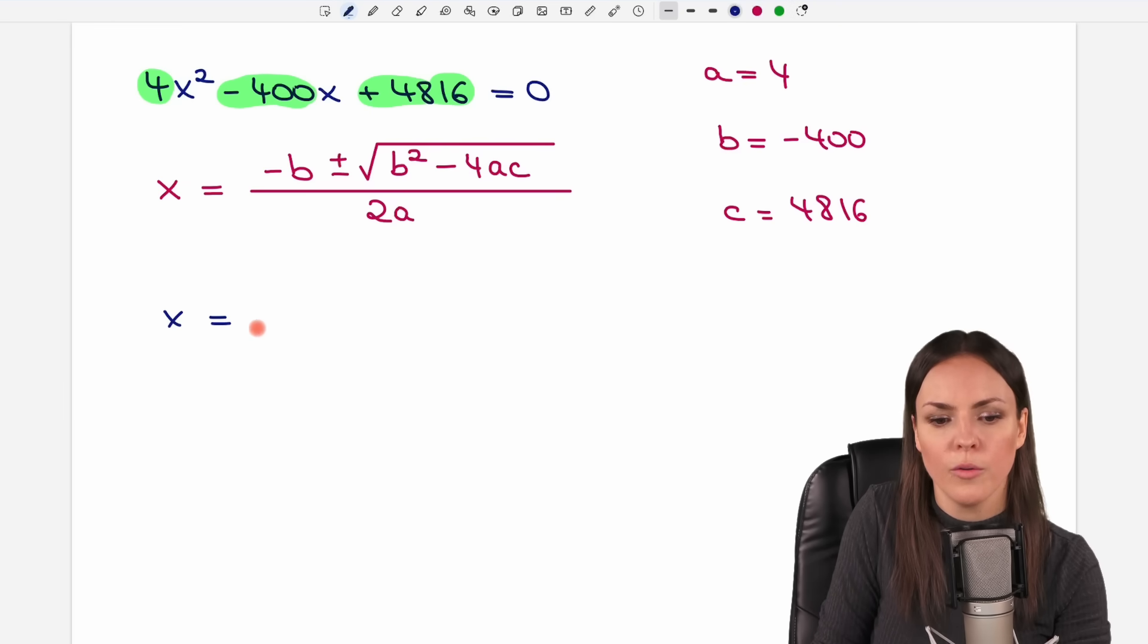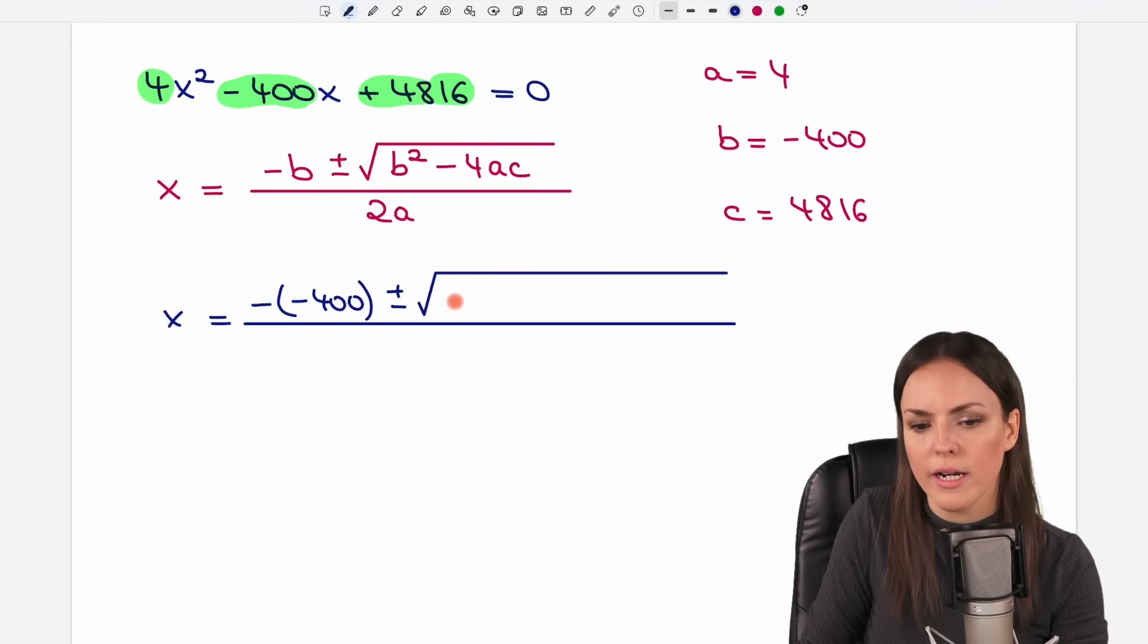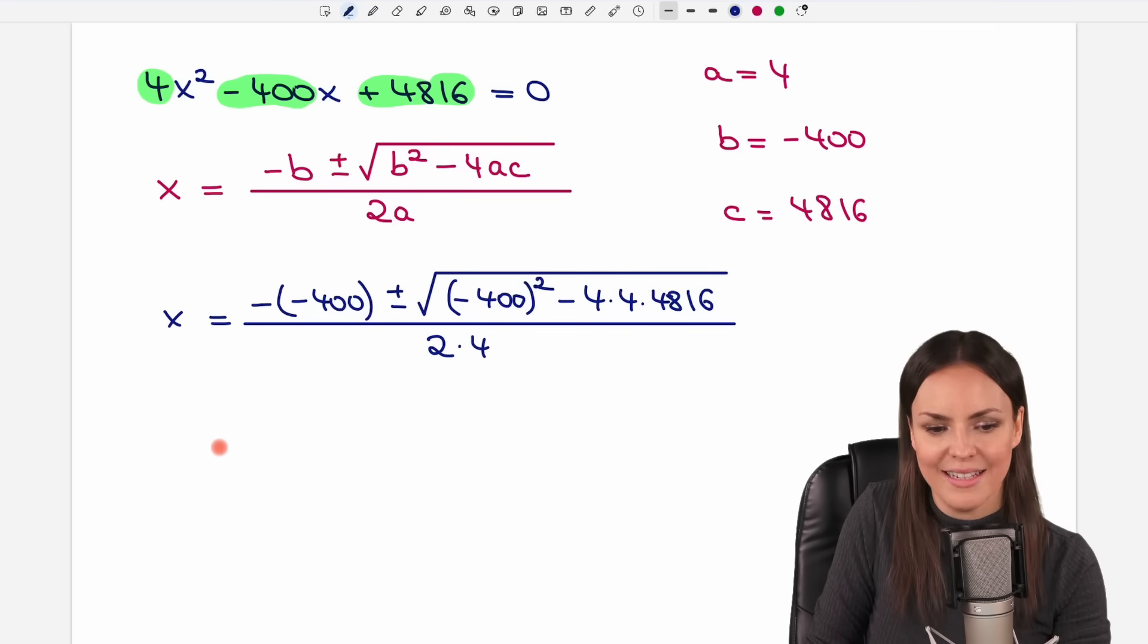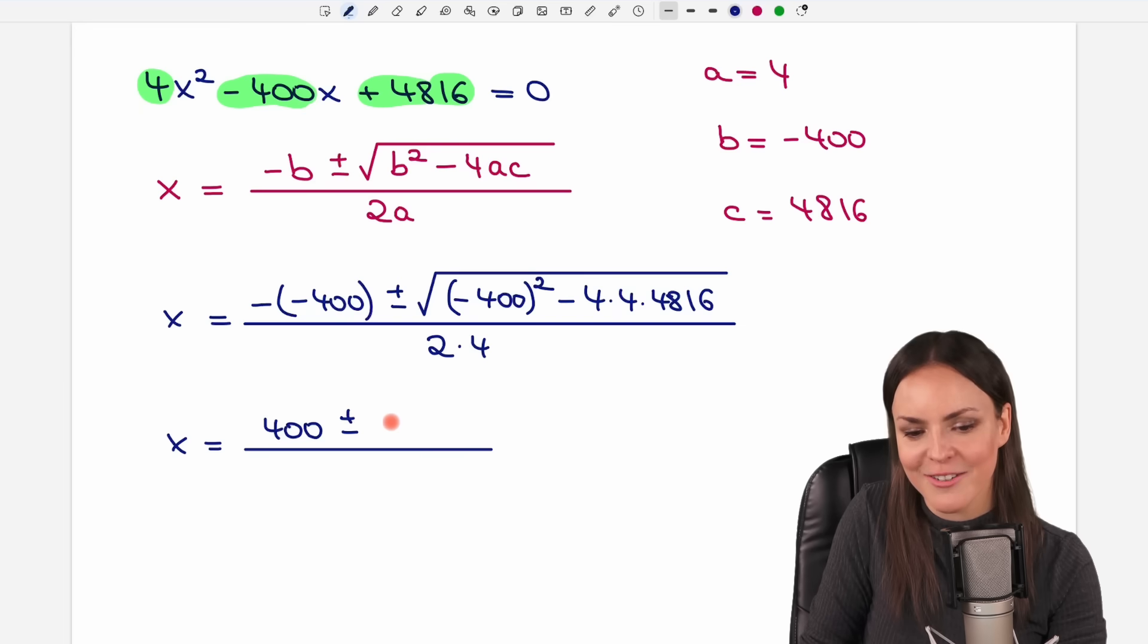Let's put this number in our formula. Minus b equals negative 400. So we write it in parentheses plus minus the square root of b squared. So negative 400 and we square it minus 4 times a. So it's 4 times c which is our beautiful number and we divide it by 2 times a equals 4. Let's simplify this. Minus minus 400 equals positive 400 plus minus. Now just use a calculator and calculate the square root here. You get a result of 288 and we divide it by 8 then.